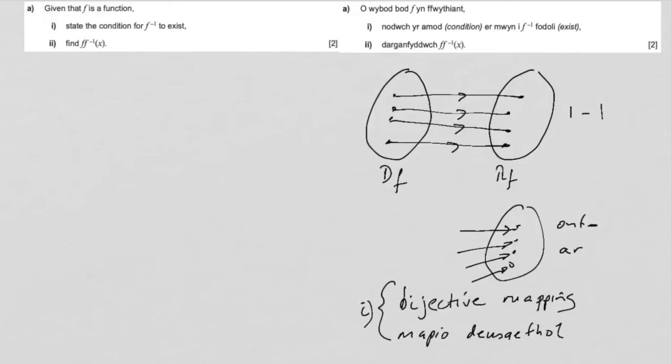For part ii, f applied to f to the minus one of x means that we're going that way with f and that way with f to the minus one. So if we're applying f to the minus one first, we're going this way and then that way, we get back to where we started. So that means f of f to the minus one of x is just x.